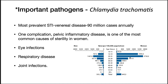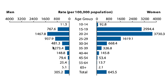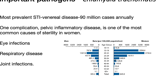The graph on the right shows the rate of sexually transmitted infection by this organism per hundred thousand individuals in the United States. As you can see, the rate is highest among young people who are more sexually active, but is not zero in any age group.